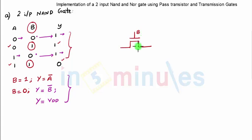When B is equal to 1, this is going to be a closed switch and it will pass A bar to the output. So I have got B equal to 1, Y equal to A bar.